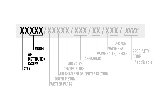The first section identifies the ATEX certification if applicable, as well as the pump's air distribution system and model. The first digit in this section is optional and denotes whether the pump model is ATEX rated. If the pump model's description starts with an X, the pump will be ATEX rated. If it starts with anything else, the pump is not ATEX rated.